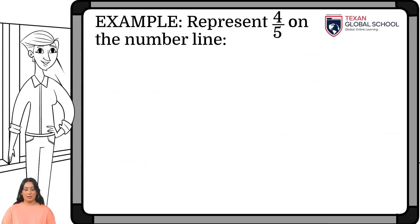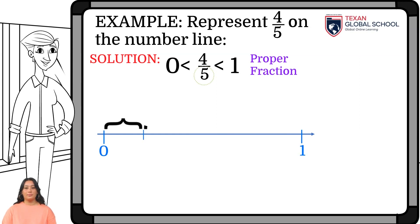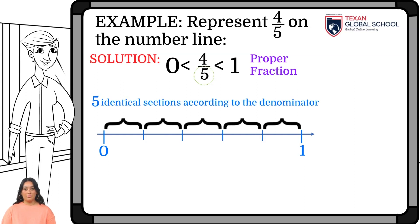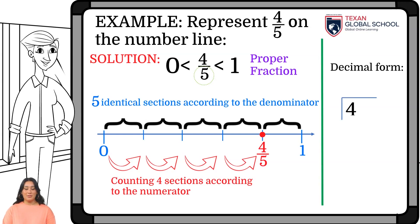In this other example, represent 4 fifths on the number line. We can see that it is a proper fraction since the numerator is less than the denominator. Therefore, the quotient will be greater than 0 and less than 1. So, to represent this fraction on the number line, we know that it will be between 0 and 1. Since the fraction has 5 as a denominator, separate the segment into 5 equal parts. And, since the numerator is 4, locate the fraction by hopping 4 times to the point where the fraction is found. Let us perform the division of 4 by 5, resulting 0.8, which is close to 1.